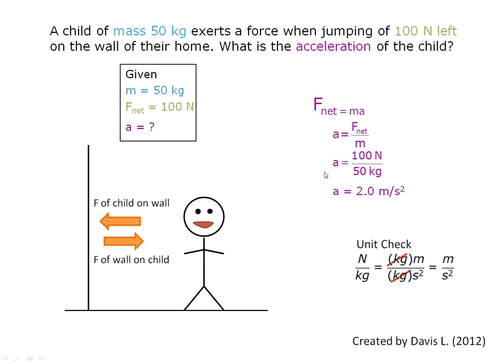So now we substitute the numbers into the equation. Acceleration is equal to 100 N divided by 50 kg and the acceleration is 2 m per second squared.